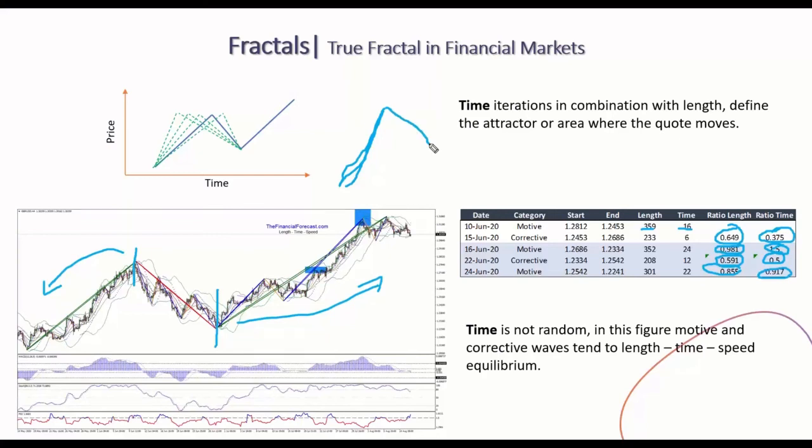In length, in time, and speed. We use this information to create what we call an attractor—an attractor scenario where the price tends to go. When the quote reaches this area, and we're talking about an area marked in length and also in time, then the price will be rejected and will move to the next attractor. In this case, this attractor can be here or this attractor can be here. We will see based on the development of the movements, once the attractor is reached, what is the highest probability pattern next to it.